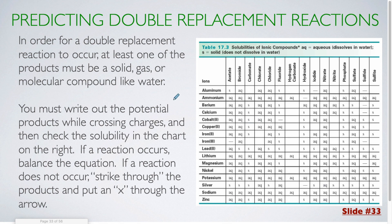Now, if a reaction occurs, you're going to balance the equation just like what we did for the single replacements. If a reaction does not occur, this is going to look a little different. For the single replacements, we wrote out no reaction because we didn't have to write out the products first, but in double replacement reactions, we have to write out the products first to see where they fall on this chart. So instead, what I'm going to have you do is use the strikethrough function if you're on the computer, or put a line through your products on paper, and put an X through the arrow.